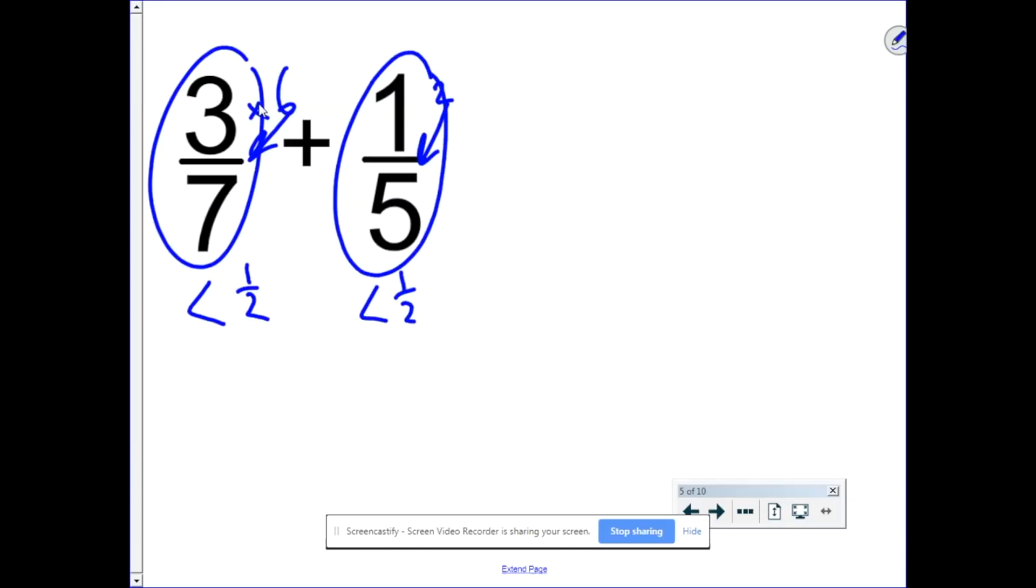If we know that three-sevenths is less than half, and we know that one-fifth is less than half, there's no way that can equal one whole. We know it's going to be less than one.